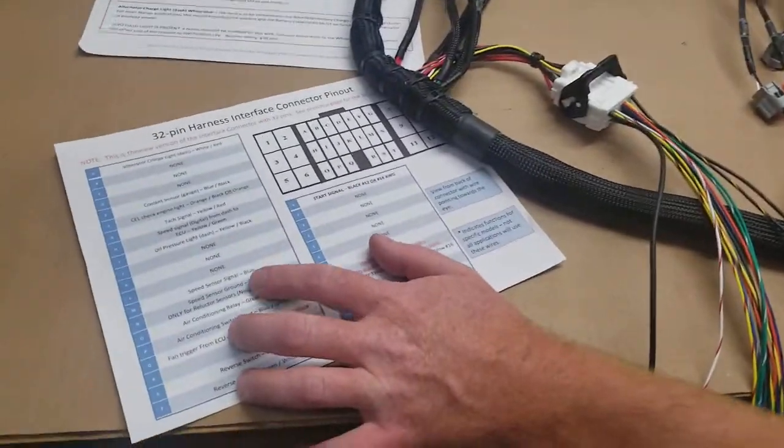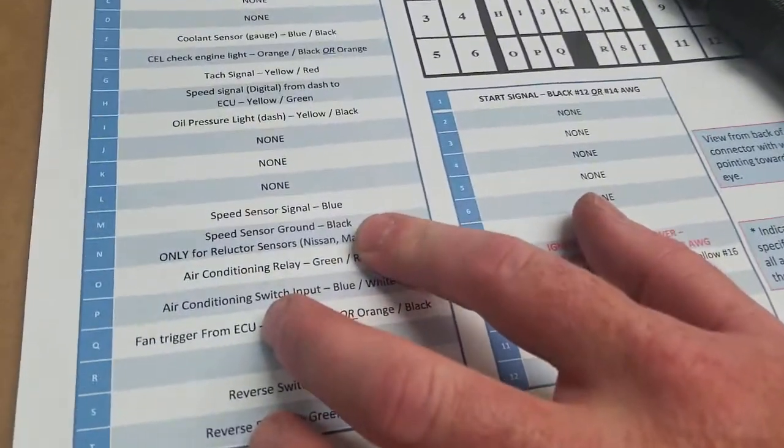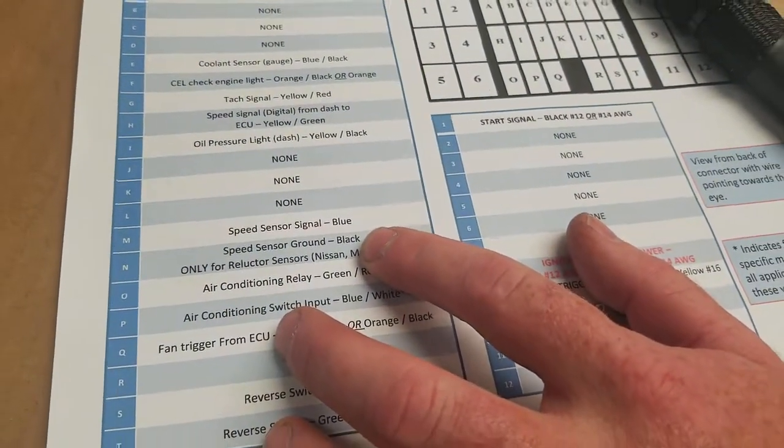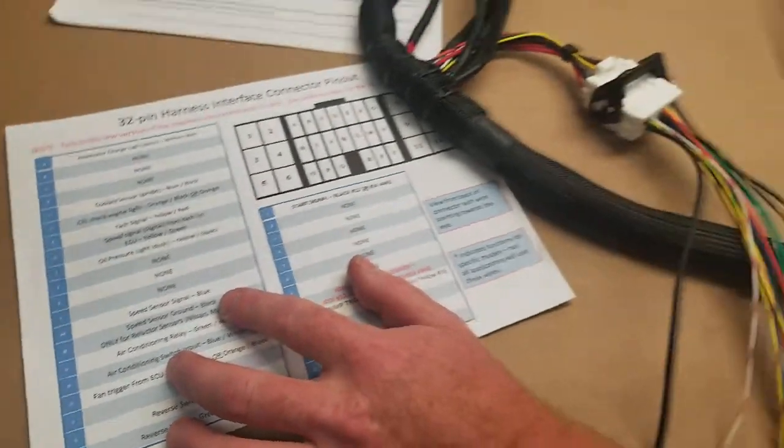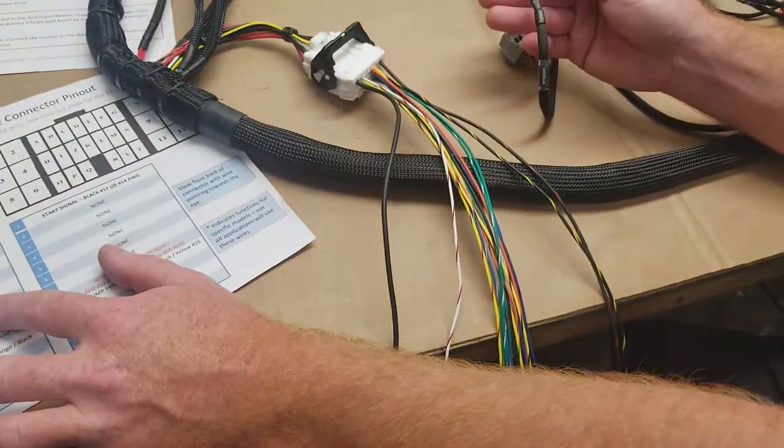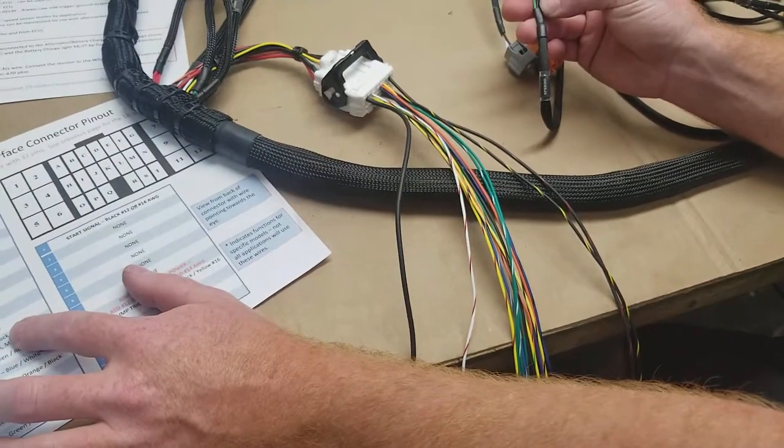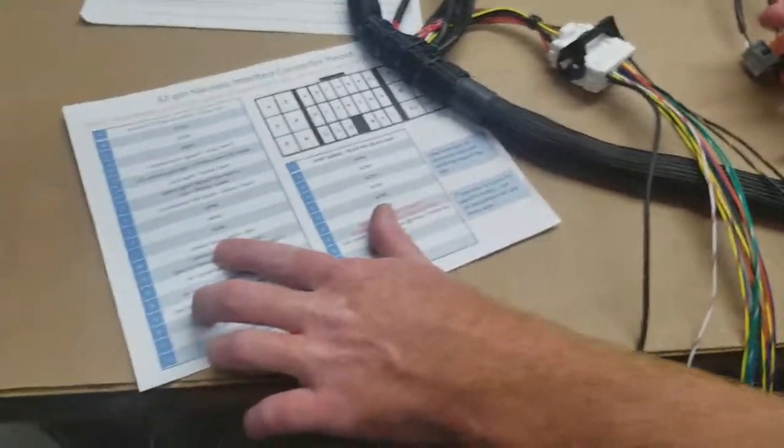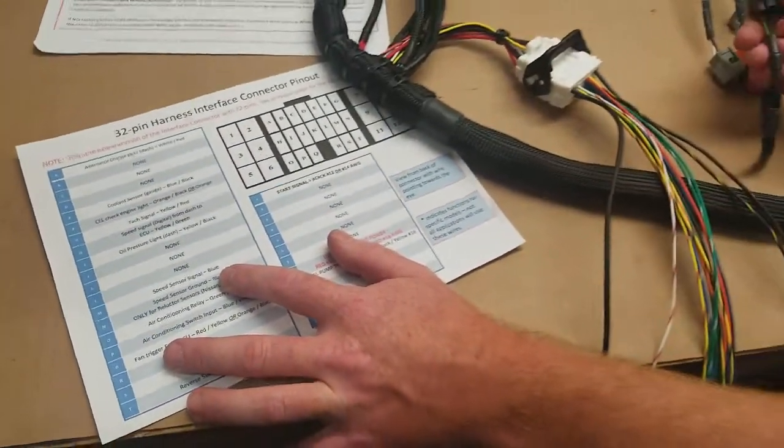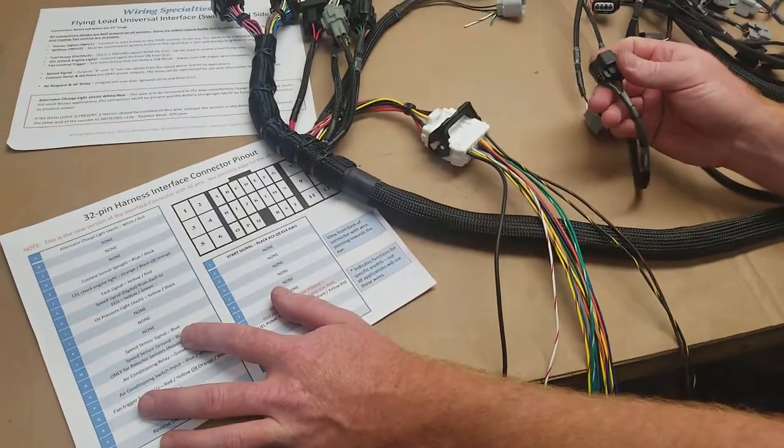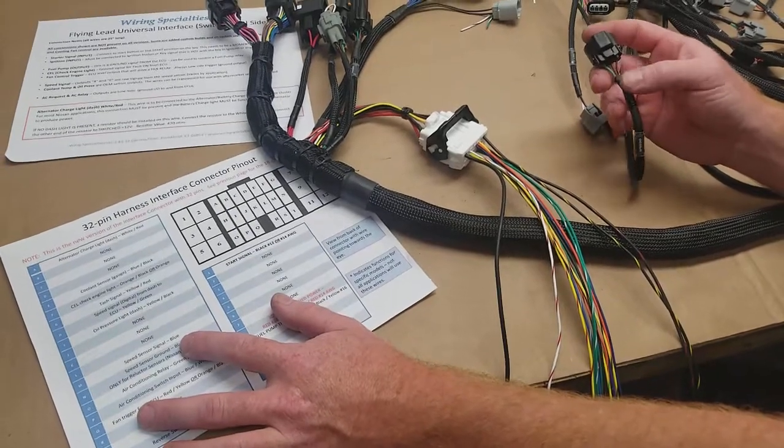Now, other things we can go over: speed signal. Nissans have a signal and a ground, so it's going to be two wires directly from the sensor into this interface here. The JZ only is going to have one wire, so it's going to be that green wire. It'll only be the signal on the JZ. This is going to produce a frequency once the transmission is spinning. You're probably going to need to use a signal conditioner depending on what kind of gauge system you're running.